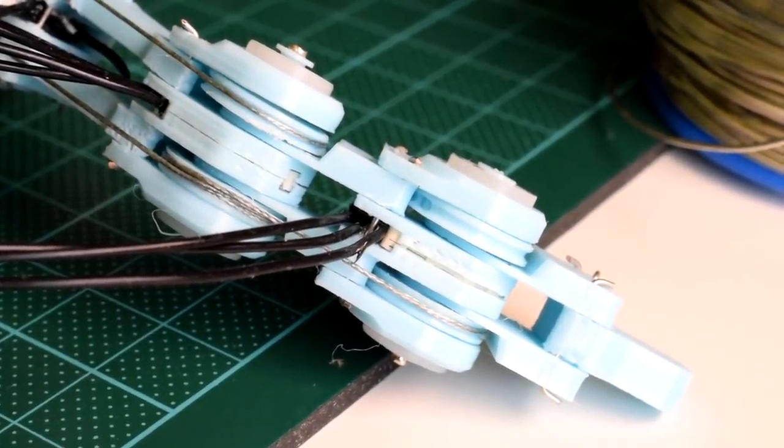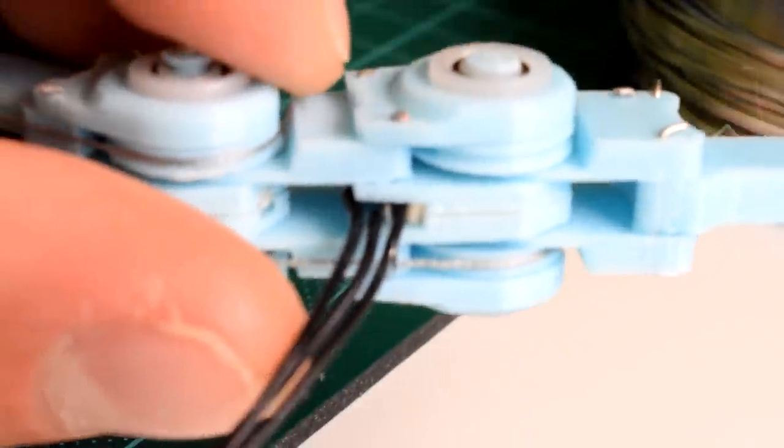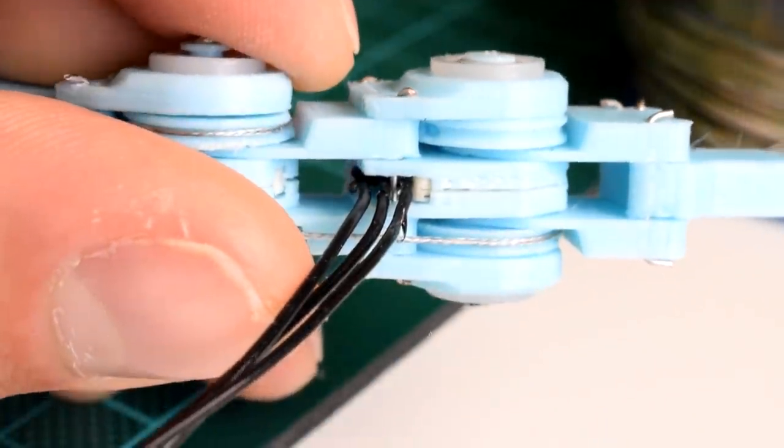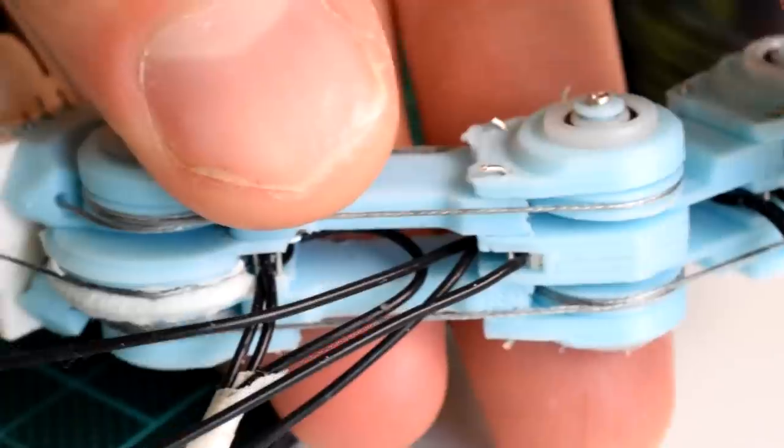So the interphalangeal joints were largely unchanged from the first video but now that I'm a little bit more comfortable with them I can show you how they go together. Having said that it was very fiddly to put together so the one I'm showing you here is not part of the actual prototype that I built.